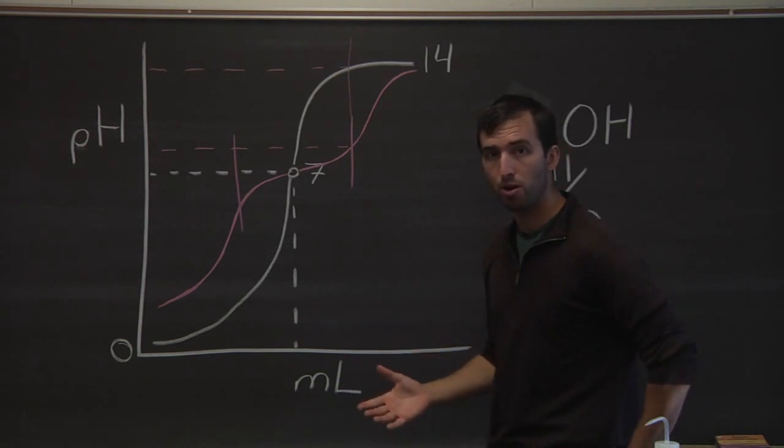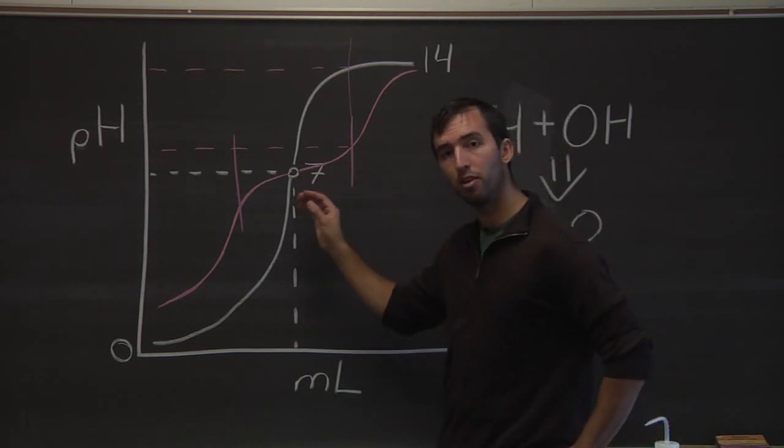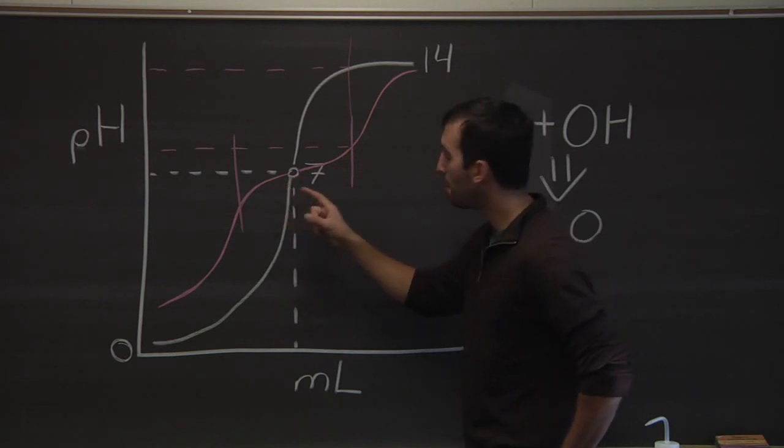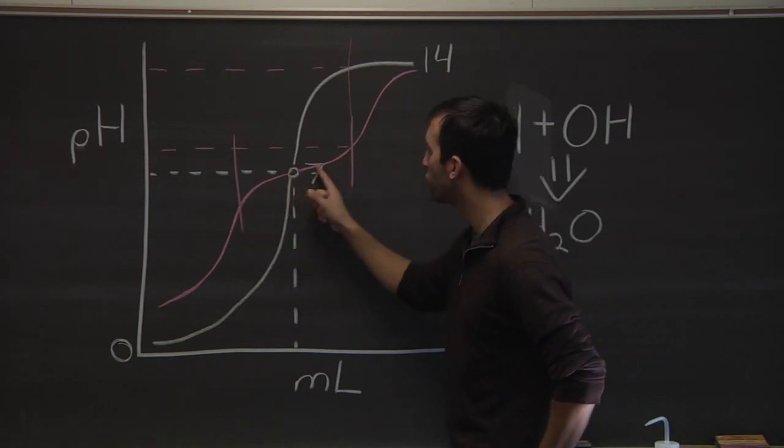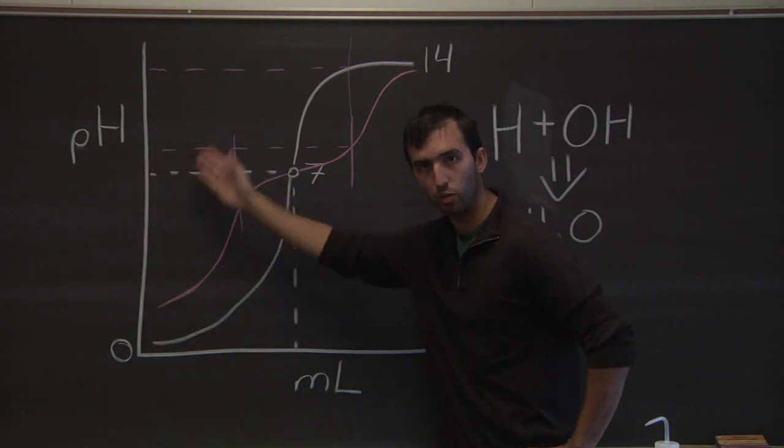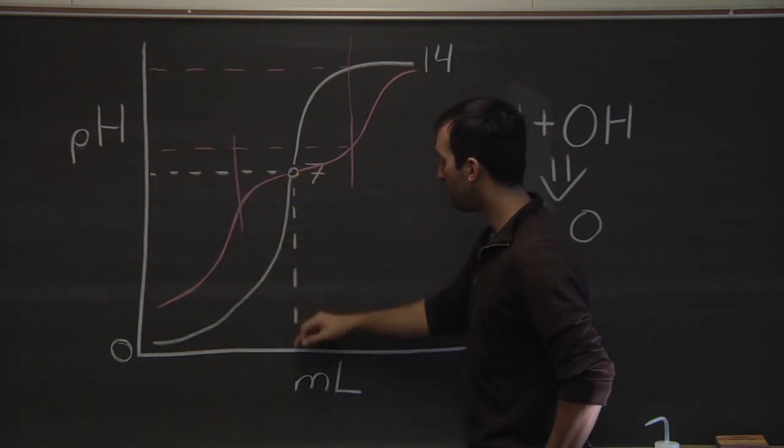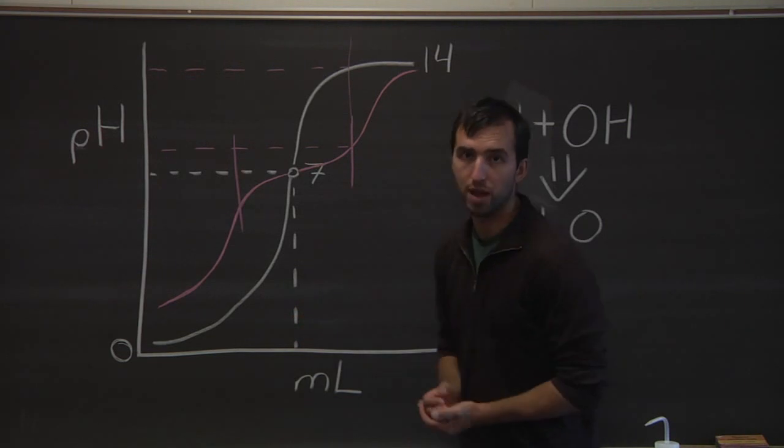In the second part, we're going to add a small amount of acid and base to the buffered solution. Now, what we expect to happen is we expect a much smaller change in the pH level, which is the y-axis, from the addition of a small amount of acid or base.